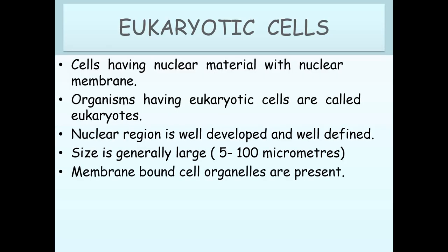Eukaryotic cells. These are cells having nuclear material with a nuclear membrane. Organisms having eukaryotic cells are called eukaryotes. The nuclear region is well developed and well defined. Size is generally large, and membrane-bound organelles are present. For example, plant and animal cells.